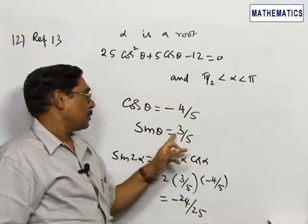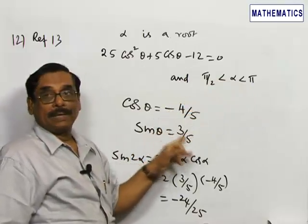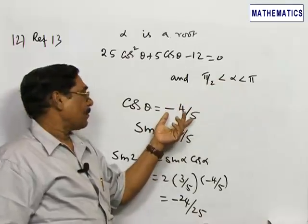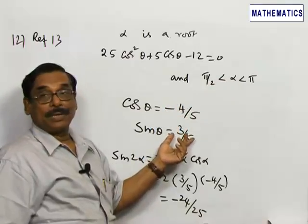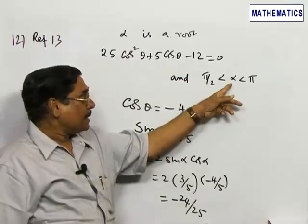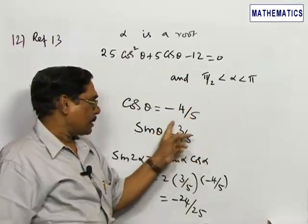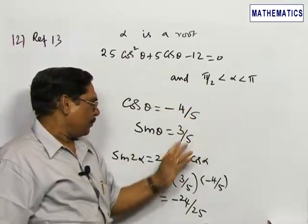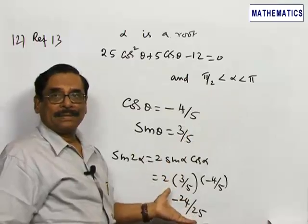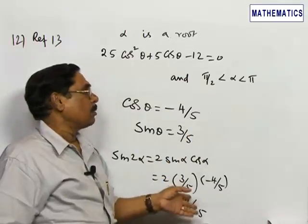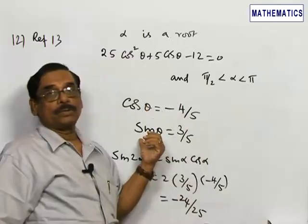Sine alpha should be positive. You should bring to mind: because cos alpha is negative, you cannot write sine alpha is also negative. No, because it lies in the second quadrant, this must be positive. Once this is done, the problem is very simple. The answer is minus 24 by 25, which corresponds to choice number 2.